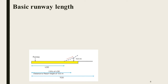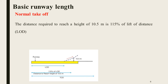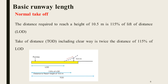For the normal takeoff case, the aircraft must clear a height of 10.5 meters. The lift-off distance is 1.15 times the landing distance. Including clearways, the distance is twice that of 1.15 times the lift-off distance.